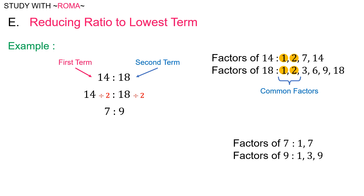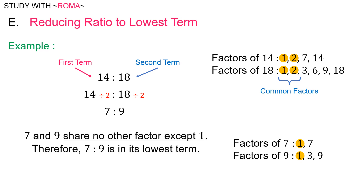The factors of seven are one and seven. The factors of nine are one, three, and nine. Seven and nine share no other factor except one. Therefore, seven is to nine is in its lowest term. Fourteen is to eighteen will be reduced to seven is to nine.